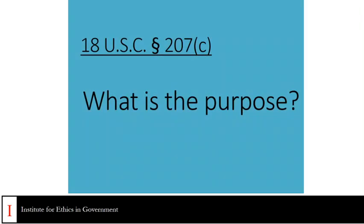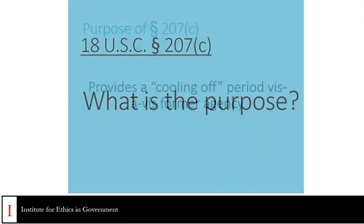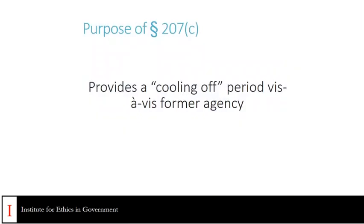What is the purpose of 207C? 207C is primarily a cooling-off period for the senior employee vis-a-vis the employees of their former agency. It prevents the former senior employee from exerting undue influence on employees of their former agency and from unfairly using any influence they may have had by virtue of the authorities they enjoyed as a senior employee.